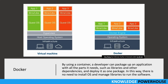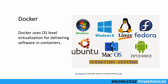By using a container, a developer can package an application with all the parts it needs. If you are developing something on your machine, you can create a container from your machine itself, and that same container is deployed as-is on the Docker engine in production. All libraries and dependencies are contained in one package, so there is no need to separately install an operating system or manage libraries to run the software.